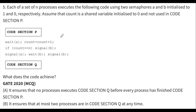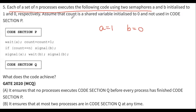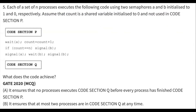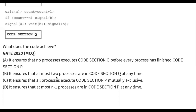This question was asked in GATE 2020 and it's an MCQ type. They have given each set of N processes executing the following code using two semaphores: semaphore A and semaphore B, initialized to one and zero respectively. Assume that count is a shared variable initialized to zero and not used in code section P.